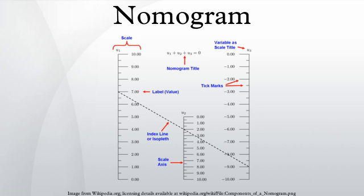Nomograms have been used in an extensive array of applications. A sample includes the original application by d'Ocagne: the automation of complicated cut and fill calculations for earth removal during the construction of the French National Railway System. This was an important proof of concept because the calculations are non-trivial and the results translated into significant savings of time, effort, and money. Other applications include the design of channels, pipes, and weirs for regulating the flow of water, and the work of Lawrence Henderson, in which nomograms were used to correlate many different aspects of blood physiology.